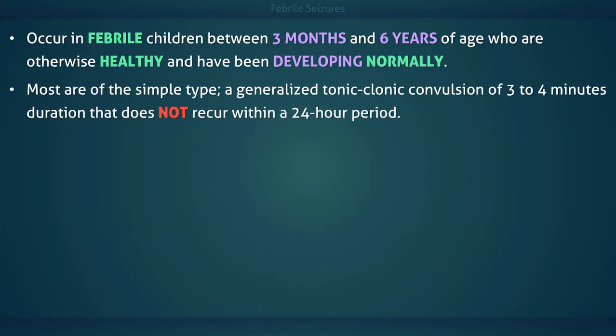Most febrile seizures are of the simple type, which usually cause a generalized tonic-clonic convulsion of 3-4 minutes duration that does not recur within a 24-hour period. However, simple febrile seizures can last up to 15 minutes and other types of generalized convulsions may occur, such as atonic or tonic seizures.